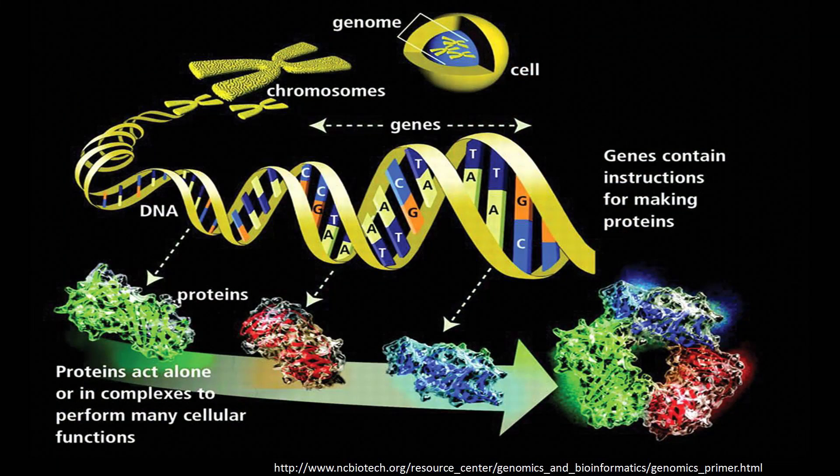Did you know that we can now edit our genome like doing word processing on a computer? The genome is a collection of genes encoded in our sequence of DNA letters — ACGT — contained within every cell of the body. Most of the known genes encode proteins that carry out different biological functions. The genome is therefore a blueprint containing all the instructions required to build our body and control how it works.